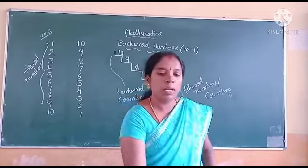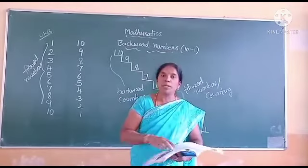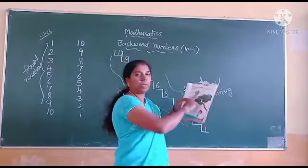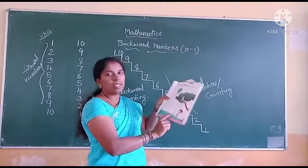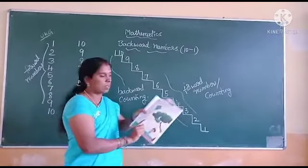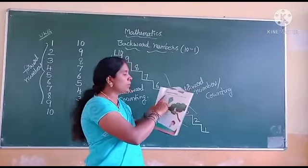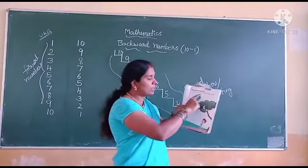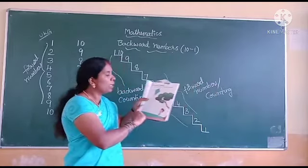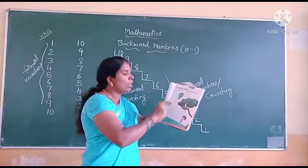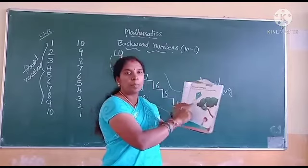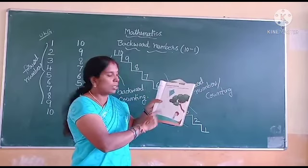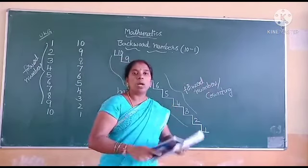Now take out your textbook and open page number 71. In this page they have given activities based on backward numbers — count backwards from 10 to 1 and write the missing numbers. You have to fill in the circles. You have to do it yourself. I hope you all understood.